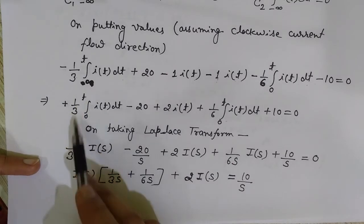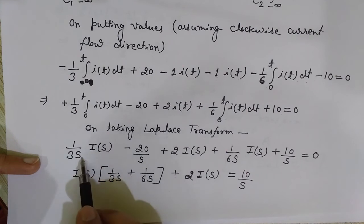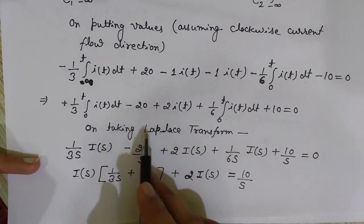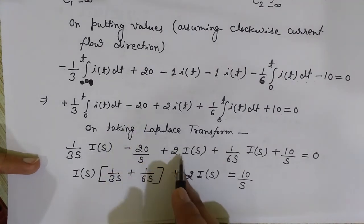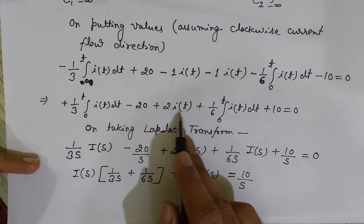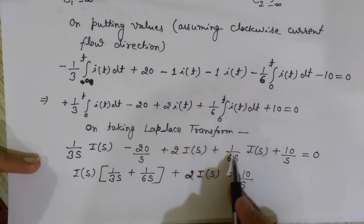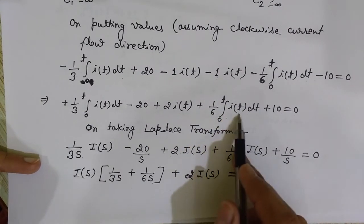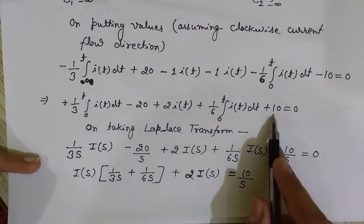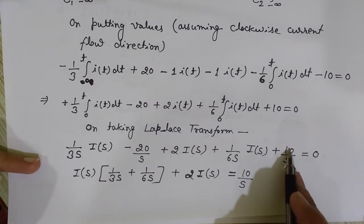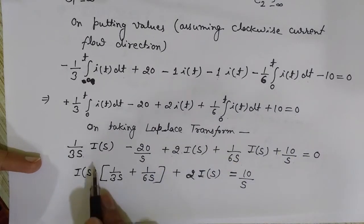Applying the Laplace transform: (1/3)·I(s)/s − 20/s + 2·I(s) + (1/6)·I(s)/s + 10/s = 0. Each integral term becomes I(s)/s with the capacitor coefficient, and each constant (20 and 10) becomes the constant divided by s.